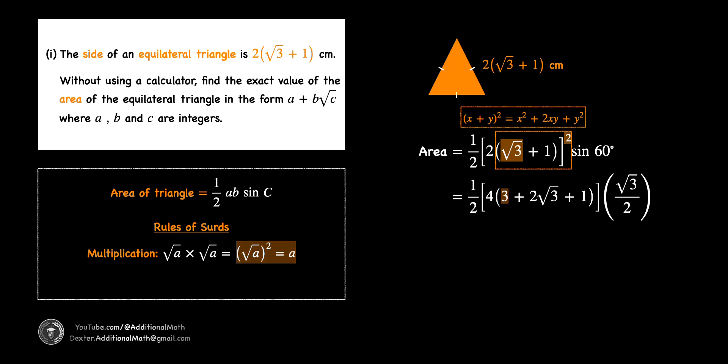For the second term 2xy in the expansion, we apply another multiplication rule where p × √a equals p√a. Thus, for 2xy in our expansion, we have 2 × √3 × 1 to give us 2√3. Then to complete the expansion of surds, we square 1.